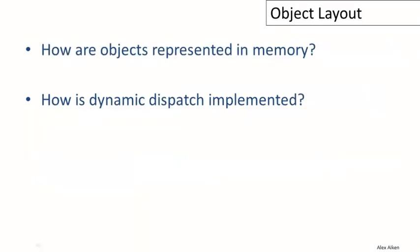There are really only two questions we have to answer to give a complete description of how to generate code for objects. The first one is: how are objects represented in memory? We need to decide on a layout and representation for objects. The second one is: how is dynamic dispatch implemented? That's the characteristic feature of using objects — we can dispatch to a method in the object and we need an implementation of that.